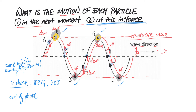C and H are also in phase. If you need to find two particles that are out of phase, that means they are moving in opposite directions. For example, B and D are out of phase. If one particle is C, then F is out of phase with C — you can see that C is going up while F, at the same undisturbed position, is going down.